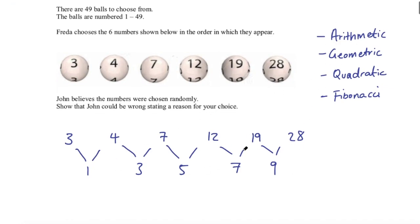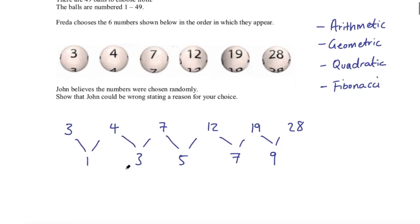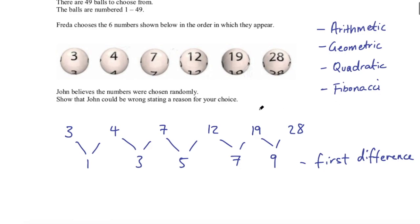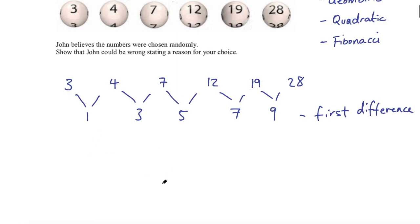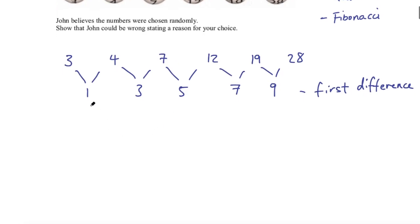We're not adding the same number so this isn't an arithmetic sequence, and we're not multiplying by the same number so it's not a geometric sequence either. The first differences are 1, 3, 5, 7, 9. We can also check it's not a Fibonacci sequence: 3 + 4 = 7, but 4 + 7 is not 12. So this is a quadratic sequence. To confirm, the second difference — the difference between the first differences — is 2, 2, 2, 2, which is a fixed number, confirming it's quadratic.